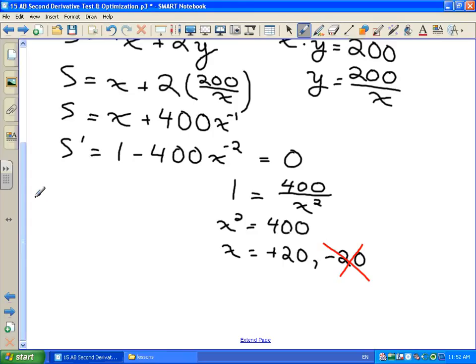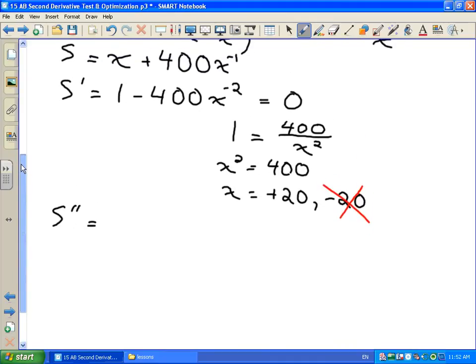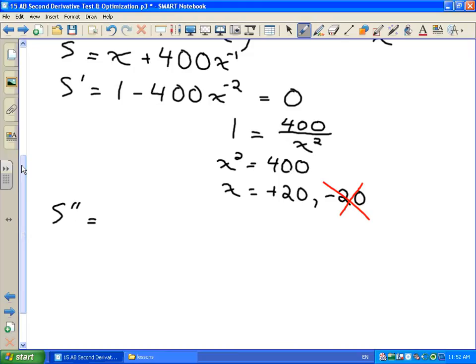Next up, we want to double check that this actually represents a minimum like we want, or this represents the x value that is going to give us the minimum value of the sum rather than a maximum value for the sum. So we're going to do that using the second derivative test. So we'll take our second derivative of our function here. So we've got our derivative is 1 minus 400x to the negative 2.